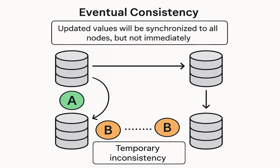On the other hand, in case of an eventually consistent system, updated values will be synced to all the nodes, but not immediately — it can take a few milliseconds or seconds, depending on the business requirements and the replication strategy. There is no guarantee about how soon this sync-up will happen. During the time sync-up is not completed, different nodes will serve different versions of data, which may lead to temporary inconsistencies.